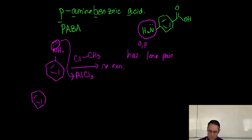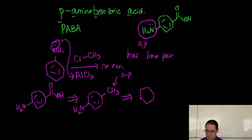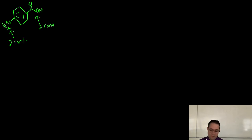Let's try a different synthesis — think about this backwards. We know carboxylic acids can come from simple alkyl groups. A methyl group is an ortho-para director, so that could come from toluene, essentially. The synthesis for para-aminobenzoic acid is quite lengthy because putting on a carboxylic acid group requires two reactions, and incorporating an amino group requires two reactions — so this is four reactions in total. Let's start with benzene.